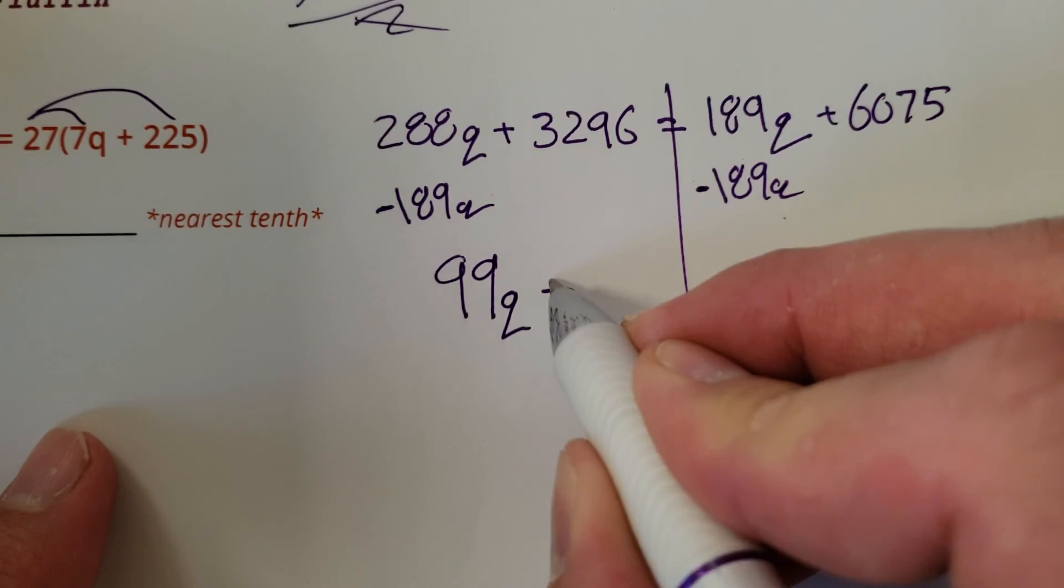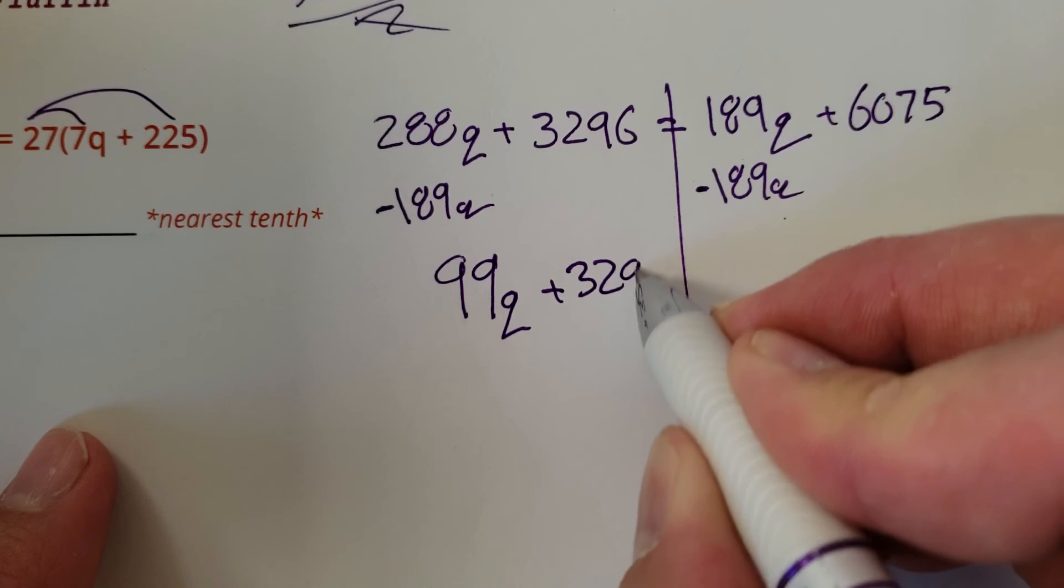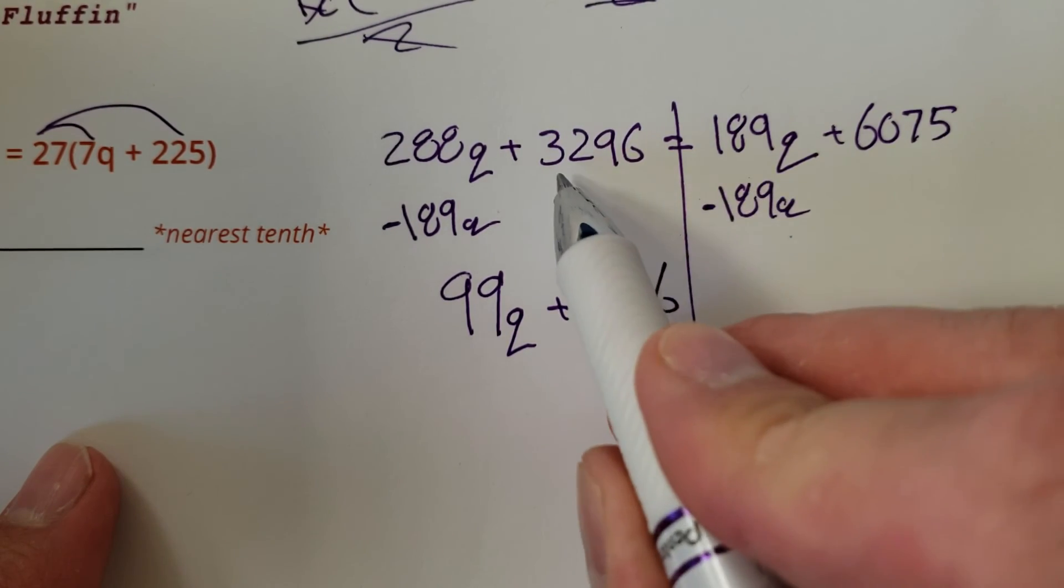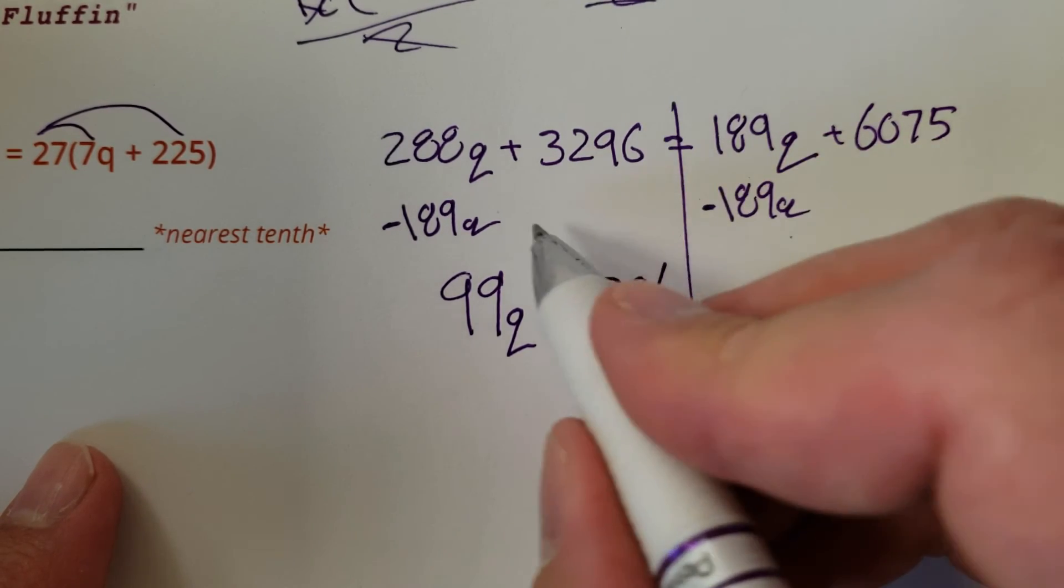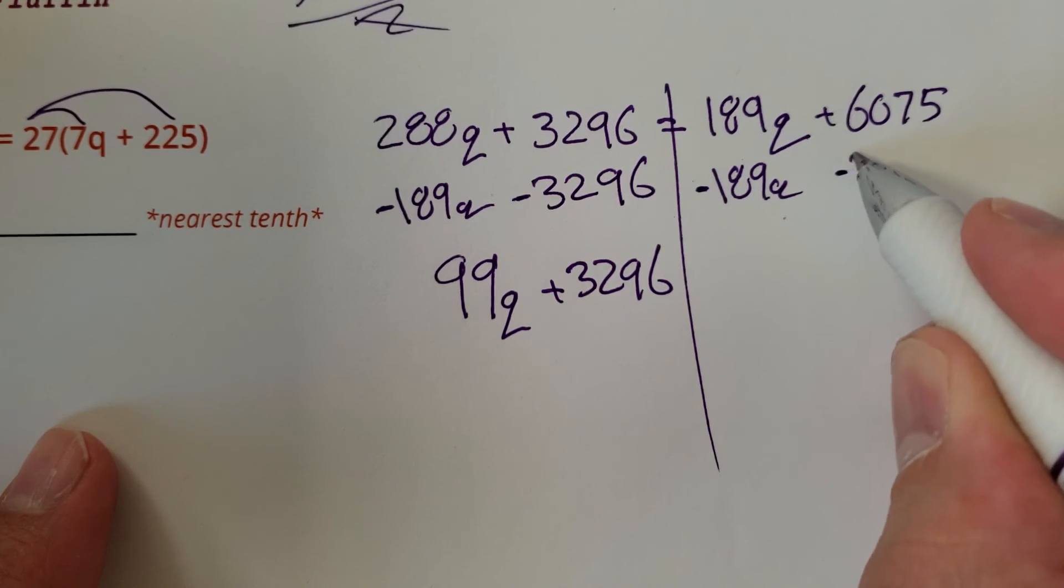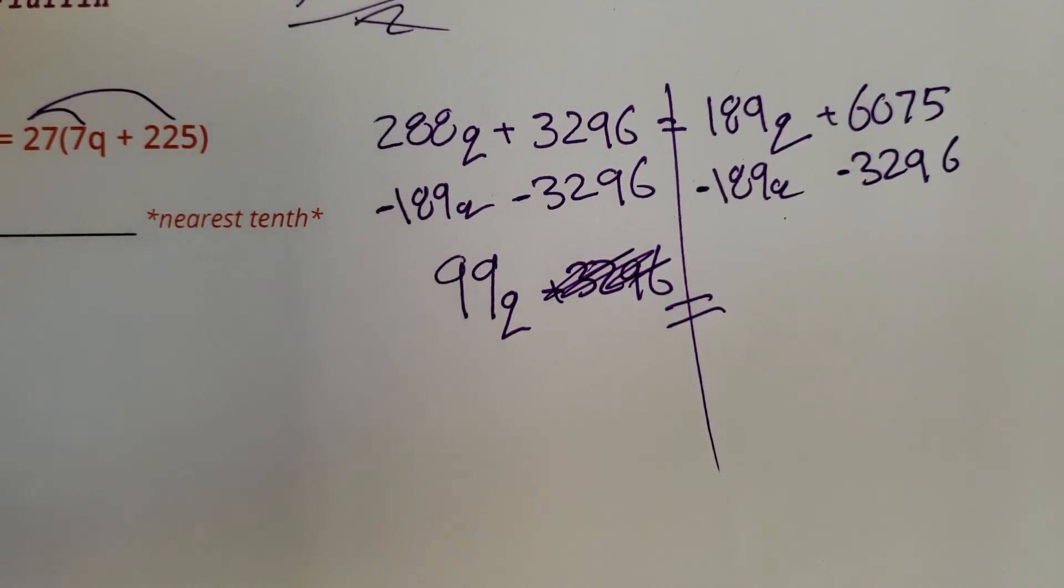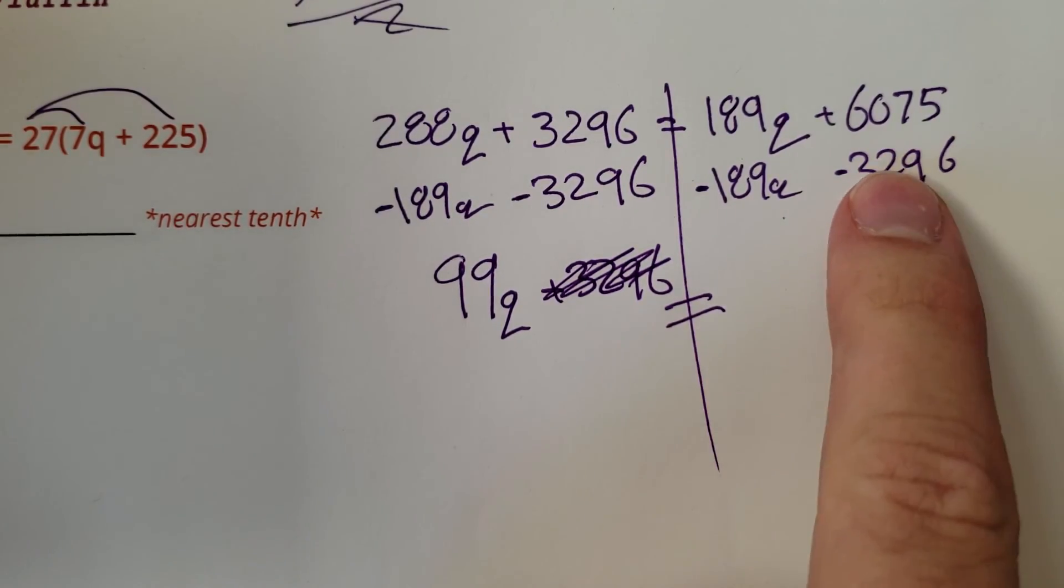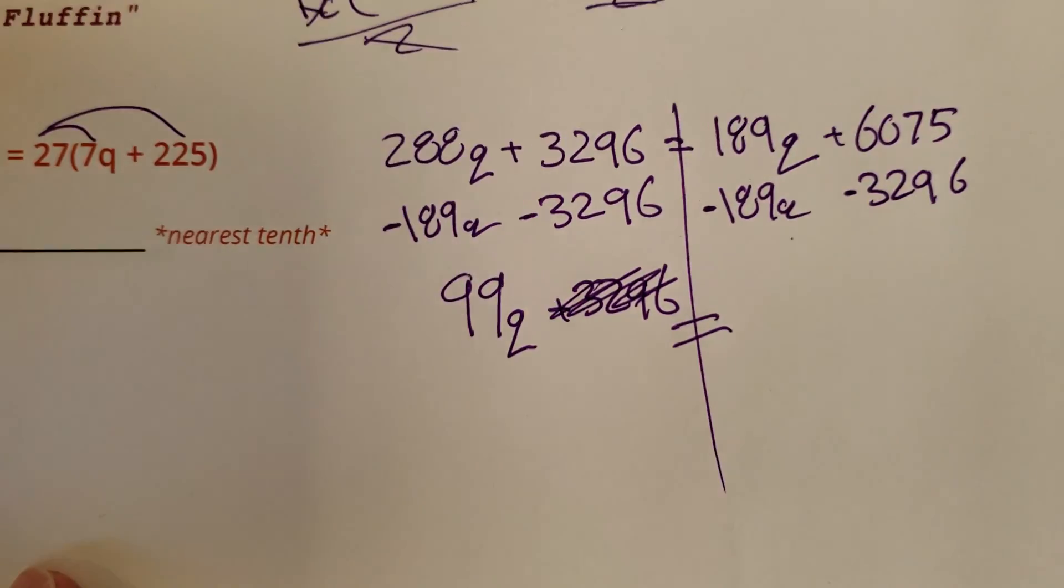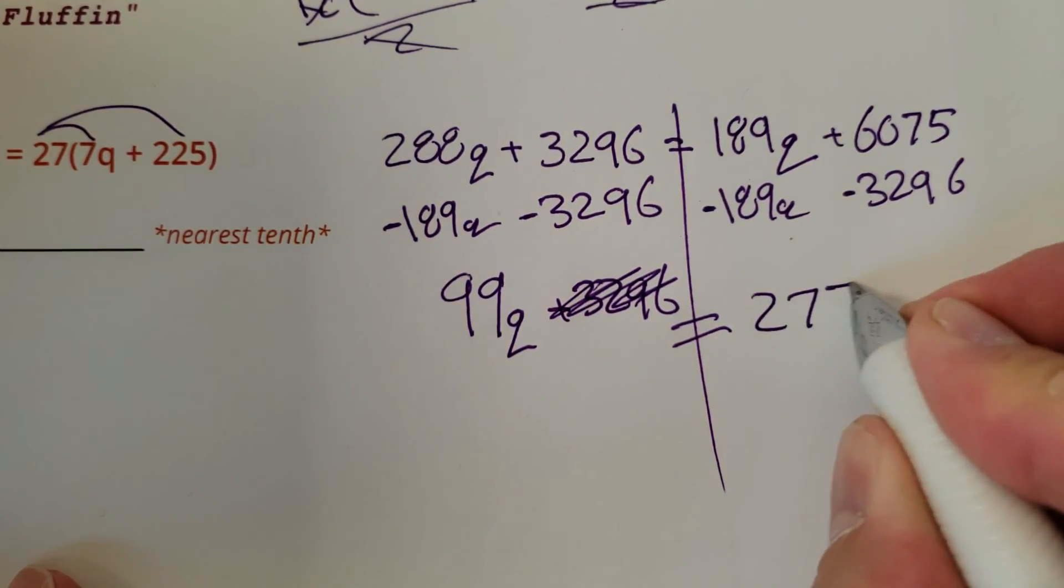99Q plus 3296. Now, I could have subtracted this and then subtracted that from both sides, but I'll do two steps in one. As long as I do the math correctly, do I really need to follow the perfect steps? Not always. I'm still doing the math right. Might as well knock it out in one swing. So 6075 minus 3296 is 2779.